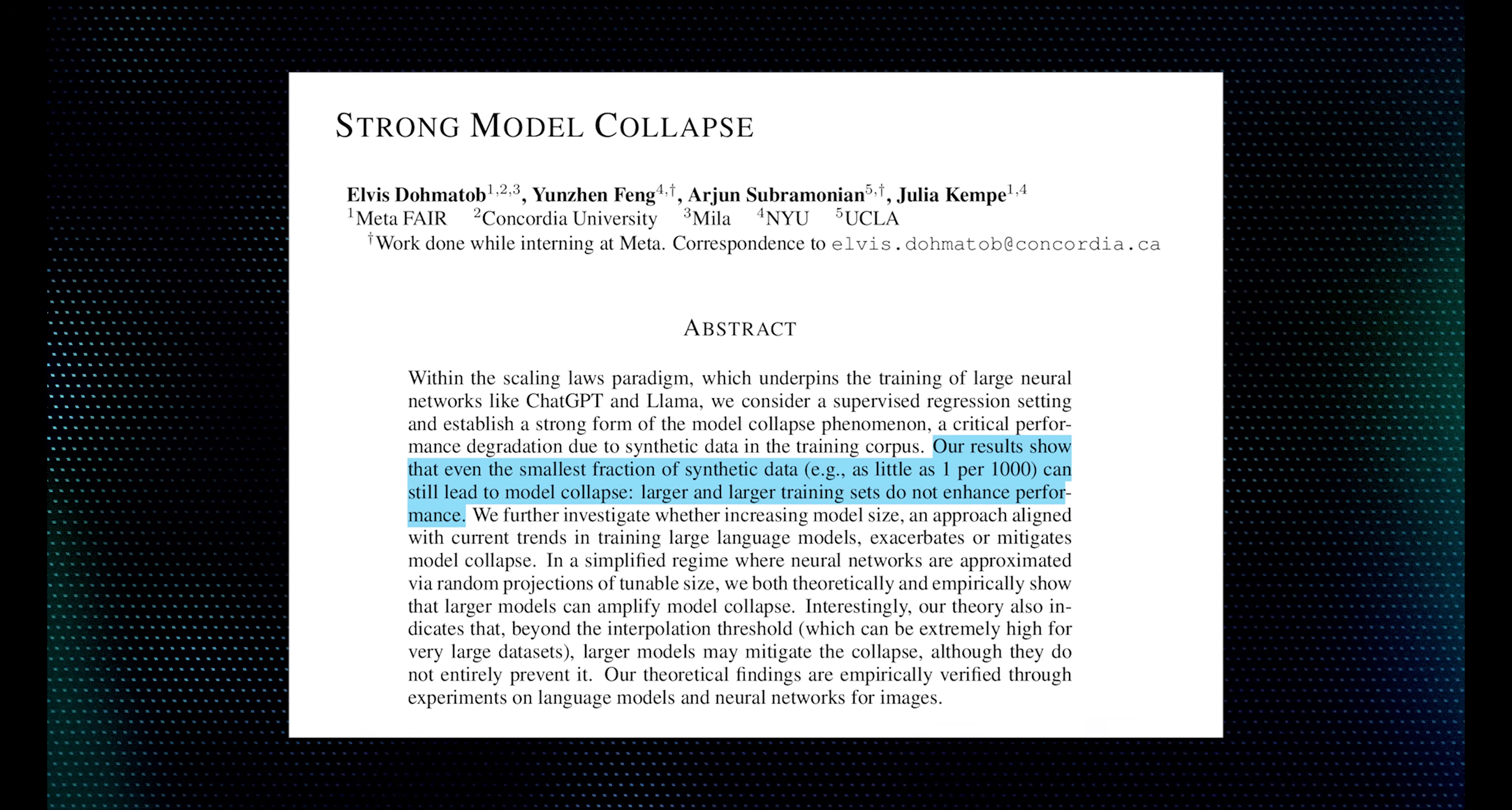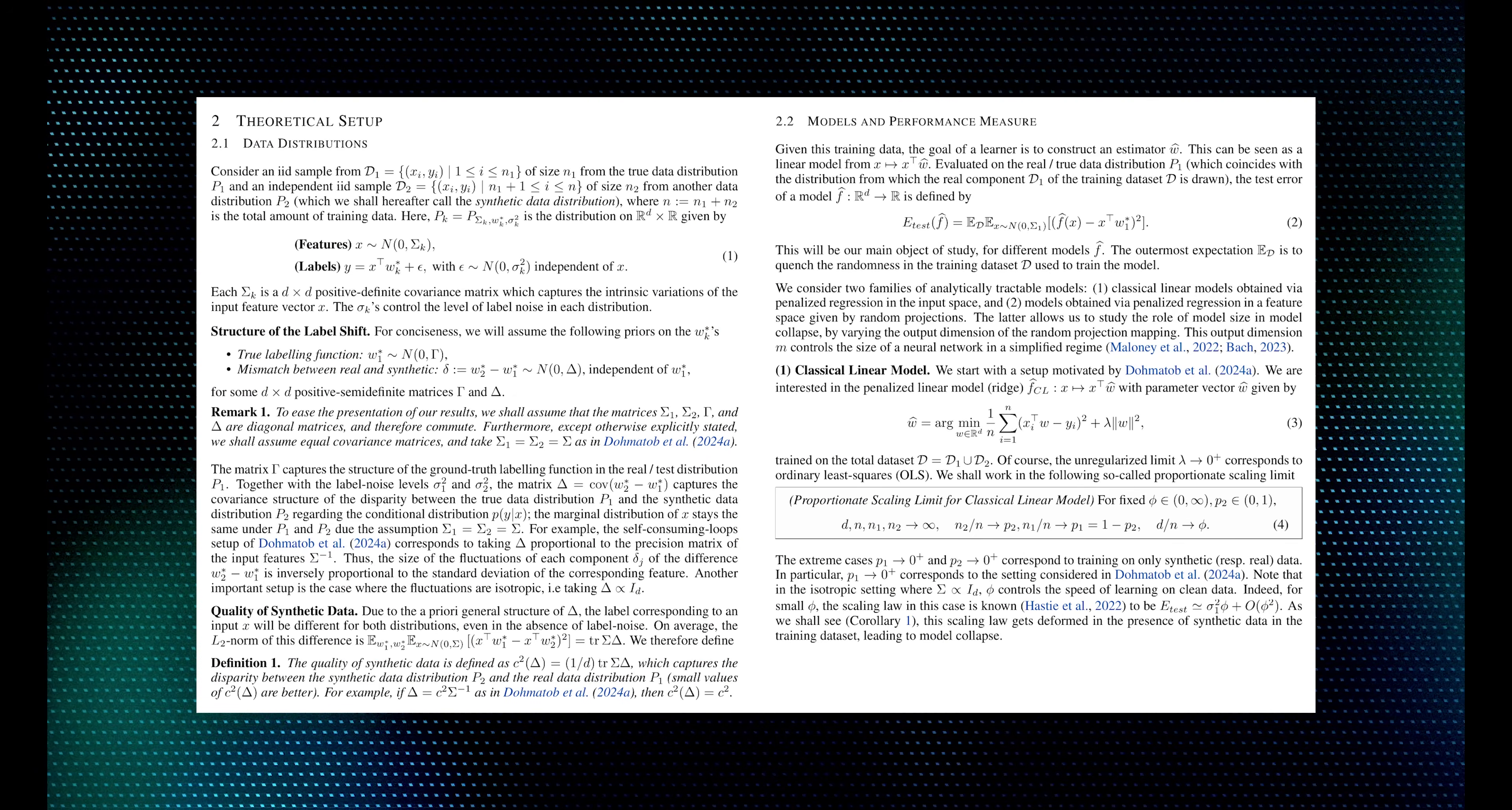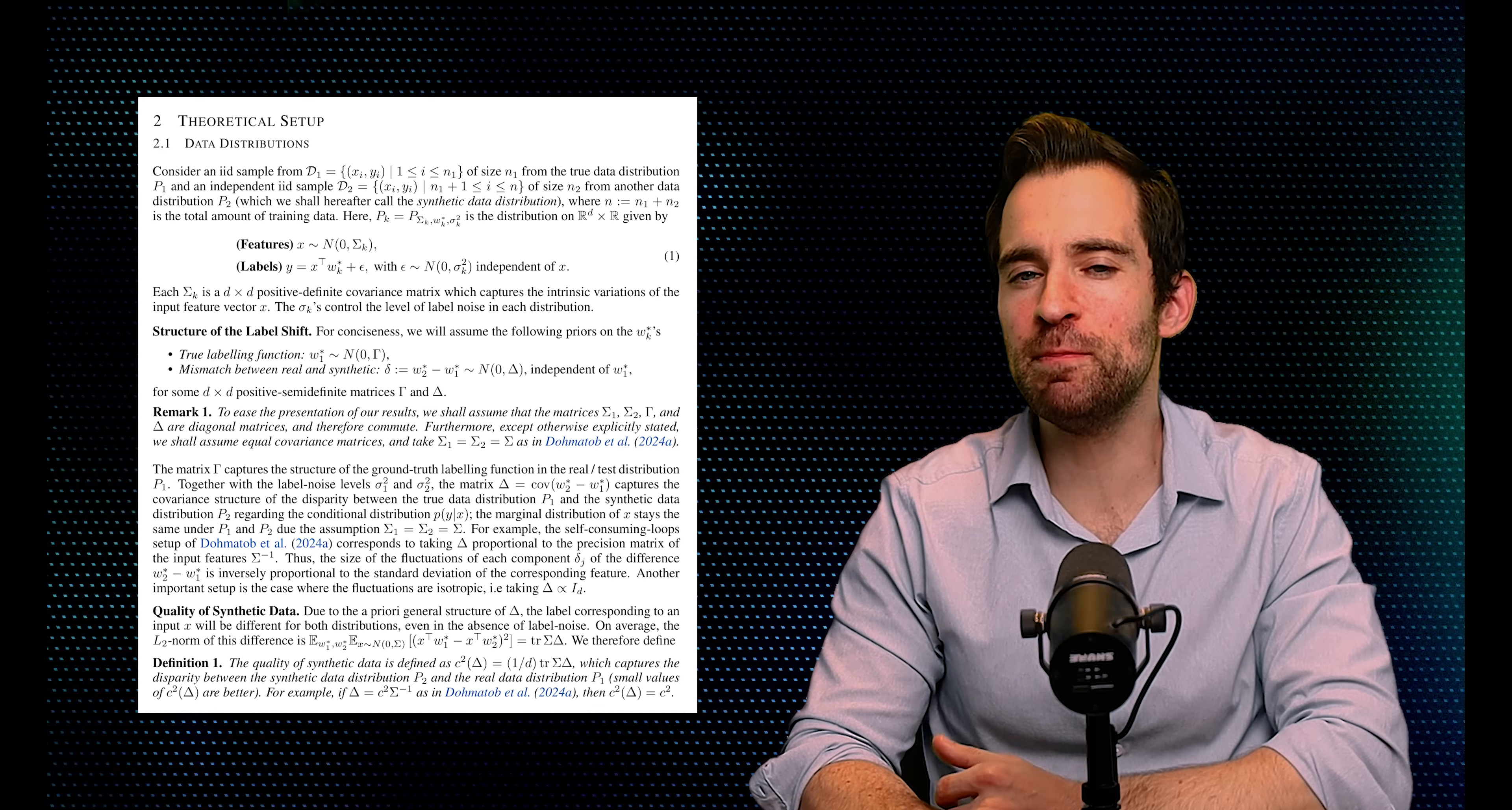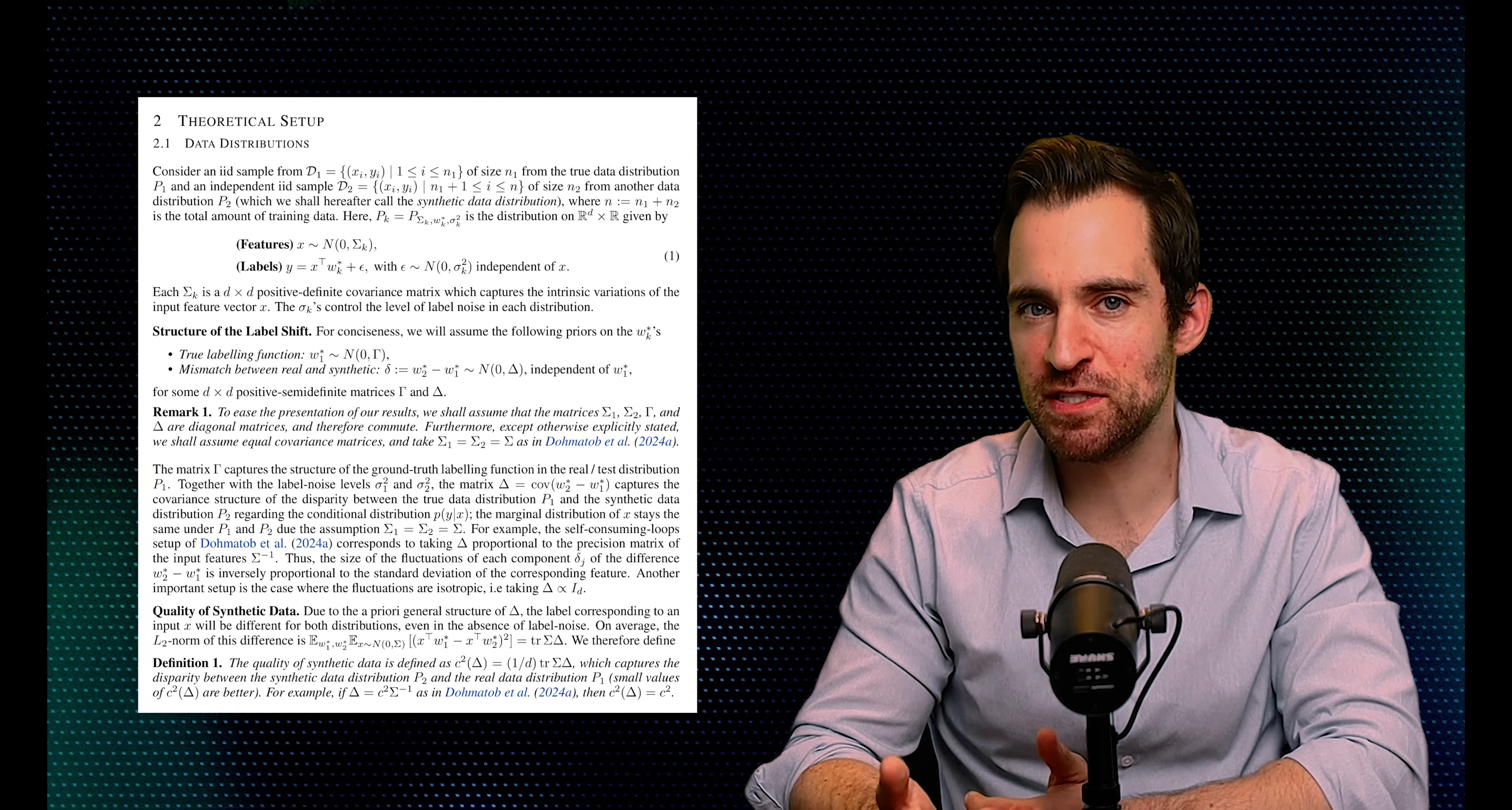Now, anytime you see proofs in these papers, they always start from a highly idealized setup to approximate the future of retraining AI models on model outputs. So that warrants a large grain of salt. Still, what they prove is interesting and relevant, so I'll give a rough sketch of it. Essentially, this setup assumes a mixture of real and synthetic data and considers a simple linear regression model on top of it.